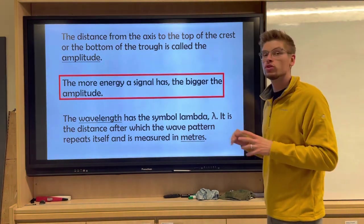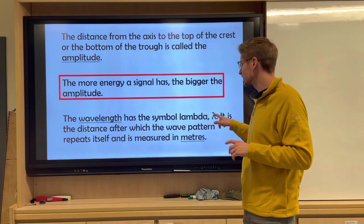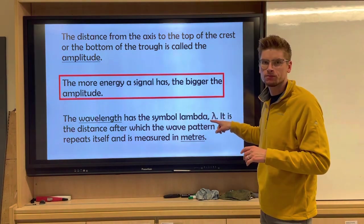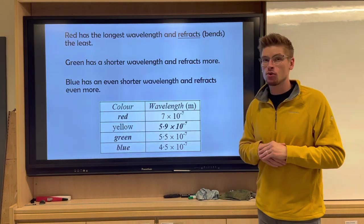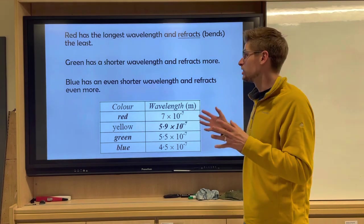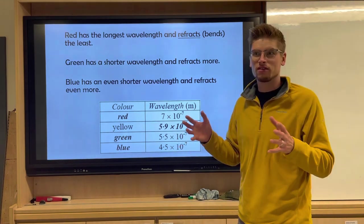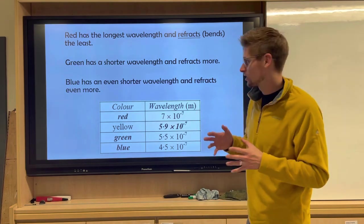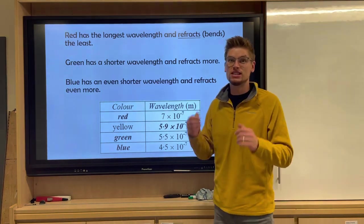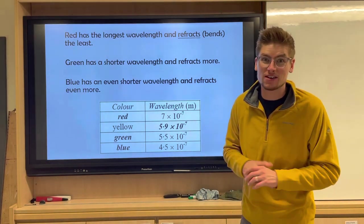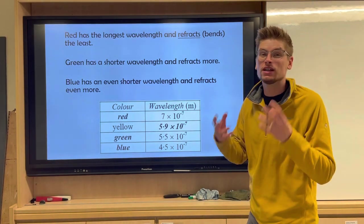We also know that wavelength is measured in this thing called lambda, which is a Greek letter, and that's the Greek symbol there. Remember it's the length of one wave. Why is that important? Well, red, green, and blue colors have a specific wavelength of light, and it's a very, very small wavelength. We're talking like 0.00000007 meters—very, very, very small for what we can see in that spectrum.